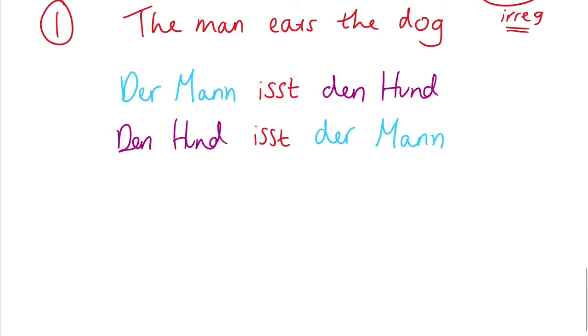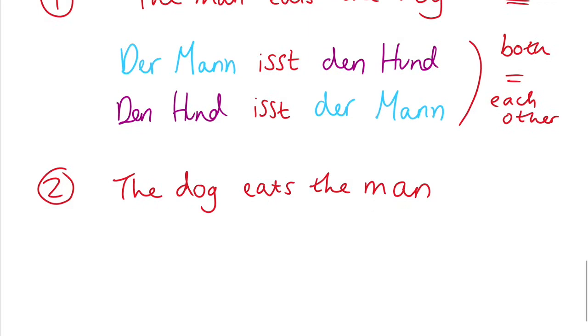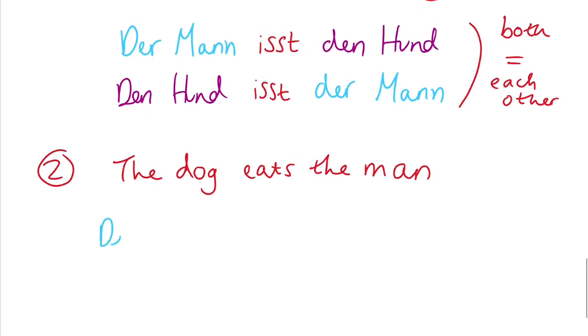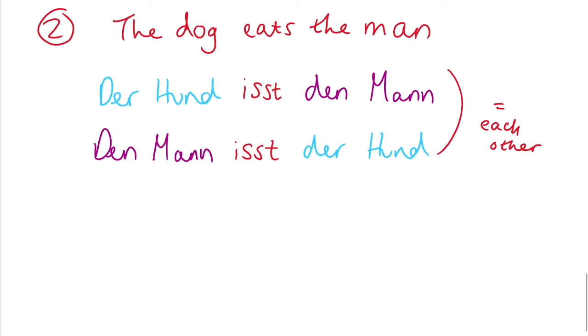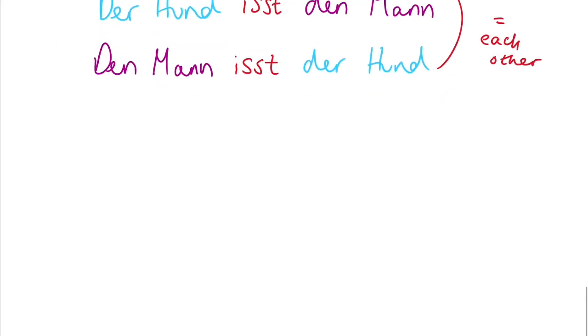Sentence two. But have a look at this. Because we know, because of the case, we know what's doing what. We can change the order around. Den Hund isst der Mann means exactly the same thing. You can change the order around, it has the same meaning. Let's have a look at sentence two. The dog eats the man. Der Hund isst den Mann. Accusative, den Mann. And we can swap it around as well at the same time. And the meaning stays exactly the same. You just have to use the right article for the case and gender of your word. Depending on what's happening in the sentence. Fantastic.